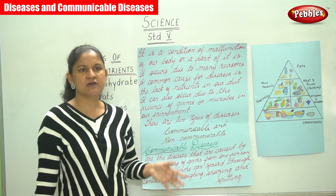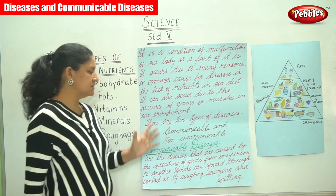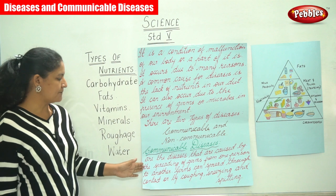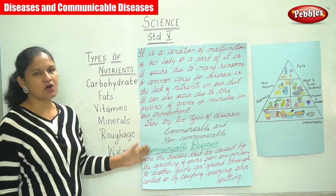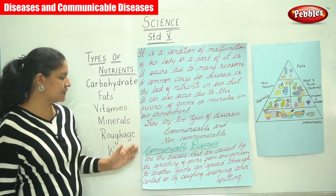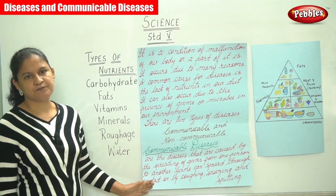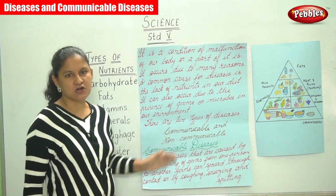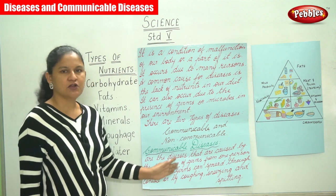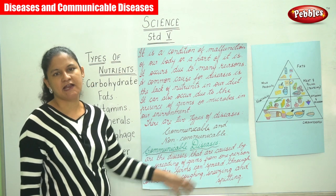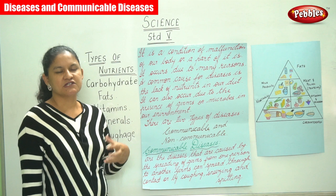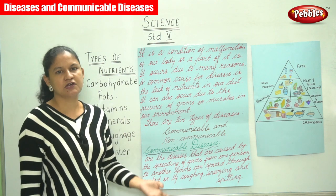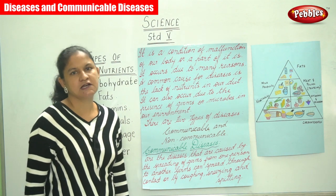Communicable diseases are caused by the spreading of germs from one person to another. Germs can spread through contact or by coughing, sneezing, and spitting — so when somebody spits, the infected germs could pass on to the next person.